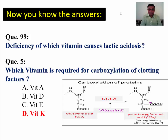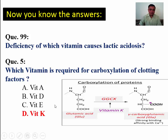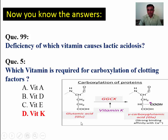Next question: which vitamin is required for the carboxylation of clotting factors? All carboxylation reactions are done by biotin, except the carboxylation of clotting factors, which is done by vitamin K. Wherever you find carboxylation of clotting factors, the answer is vitamin K. Vitamin K causes carboxylation of glutamate, forming gamma-carboxyglutamic acid. So the amino acid carboxylated is glutamate.